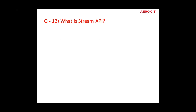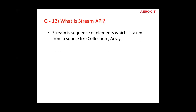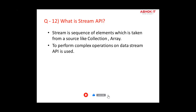Question twelve: What is the Stream API? A stream is a sequence of elements taken from a source such as a collection or array. A stream in Java can be defined as a sequence of elements from a collection or array, and streams are used to perform complex operations on collections — such as filtering, sorting, and mapping. A stream is not a data structure; it is designed for lambdas and does not support index access.